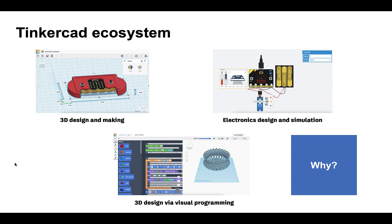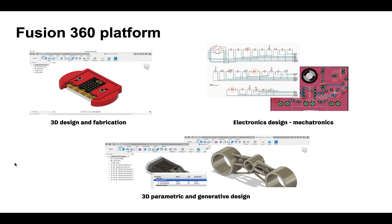If you think about the next step into Fusion 360 — on Tinkercad we're talking about 3D design and making, electronics design and simulation, and 3D design via visual programming. When you move into Fusion 360, we're talking about 3D design and fabrication, more manufacturing mechanisms and techniques, electronics design and mechatronics, and 3D parametric and generative design — which is a very obvious next step for those interested in moving into mechanical or industrial design. What you design in Tinkercad is not very different in some mechanisms, but Fusion 360 offers so much more power.